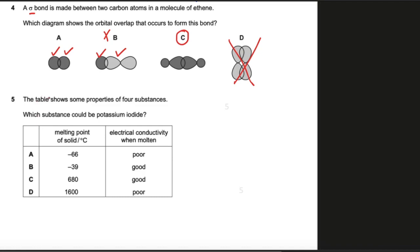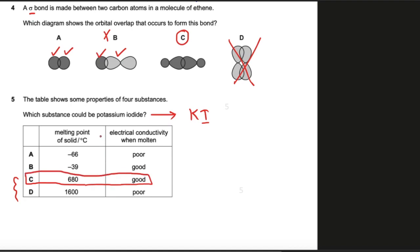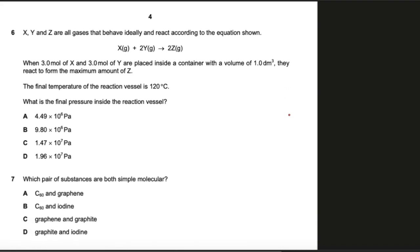Question 5: The table shows some properties of four substances — which substance could be potassium iodide? Potassium iodide is an ionic compound, and ionic compounds have a high melting point, so we look at options C or D. In the molten state ionic compounds are good conductors of electricity, so option C is the correct answer: high melting point and in molten form the positive and negative ions are free to conduct electricity.